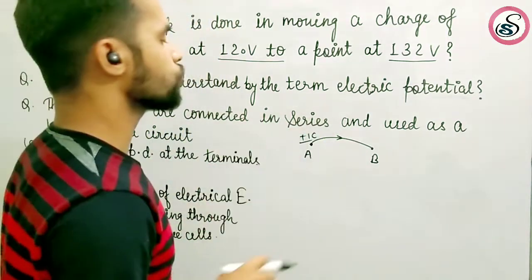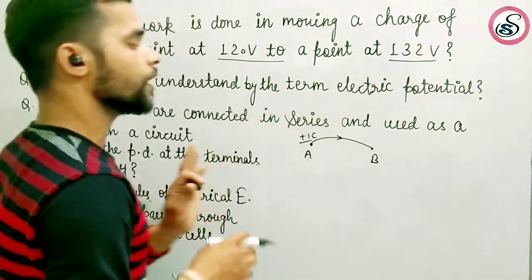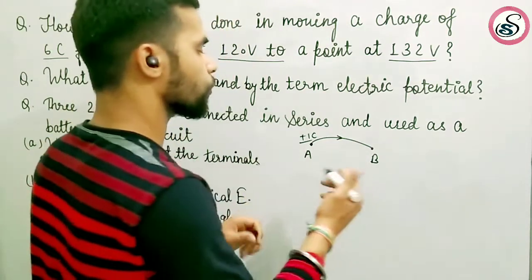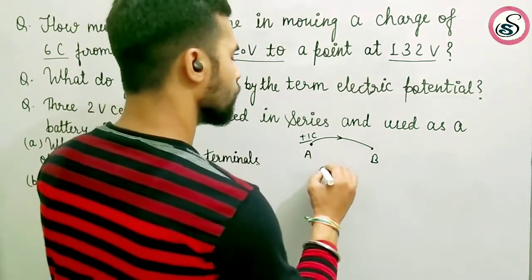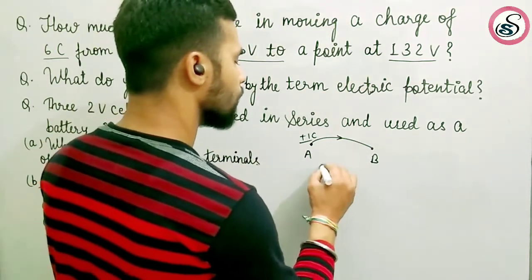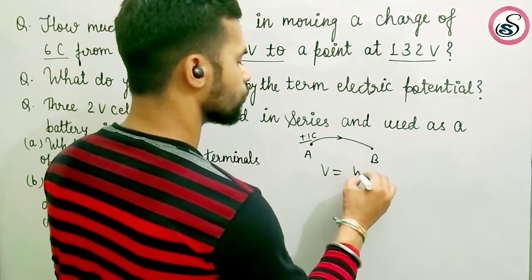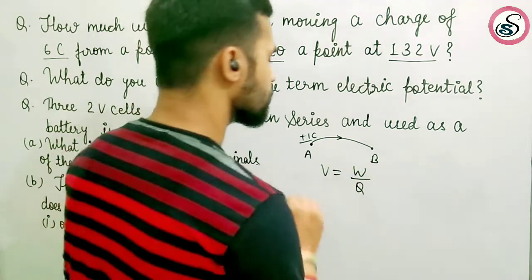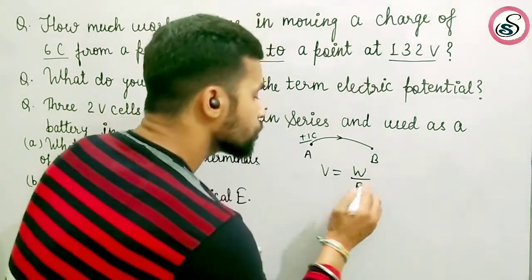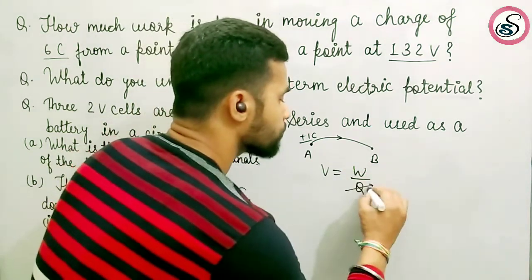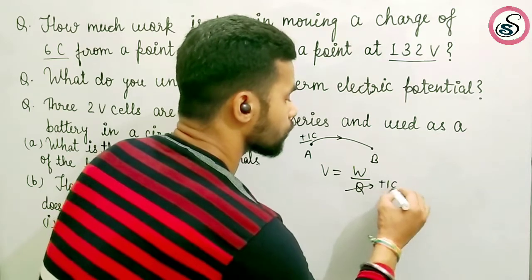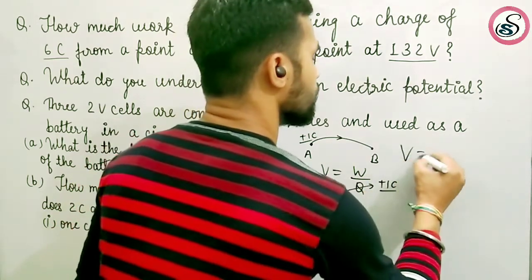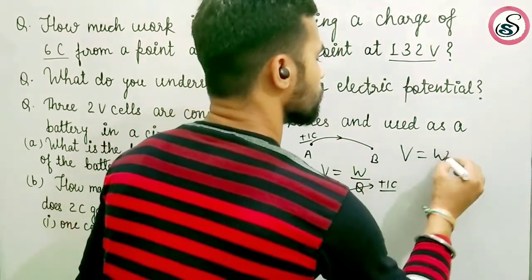एक positive unit test charge को ले जाने में जो work done करना पड़ेगा वही electric potential होता है। और इसका formula है V is equal to W upon Q। जब Q की value plus 1 coulomb रख दोगे तो V is equal to W हो जाएगा।